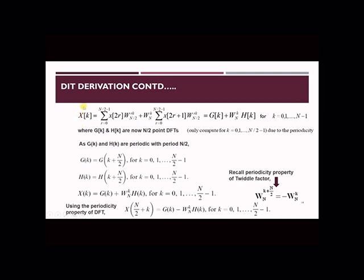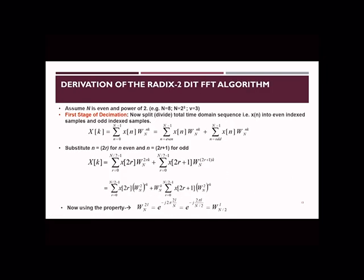Let us take the derivation in continuation with the previous part where we have divided the sequence x of n into even number of samples and odd number of samples. As x of k is expressed basically from n equal to 0 to n minus 1, now this summation we are splitting into two parts, one part which contains only even numbered samples and the other part which contains only odd numbered samples.